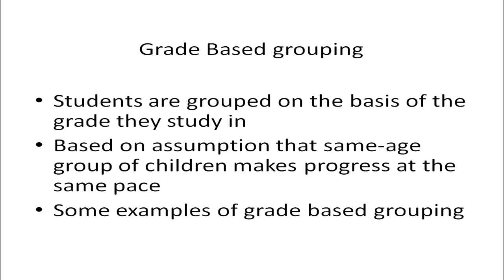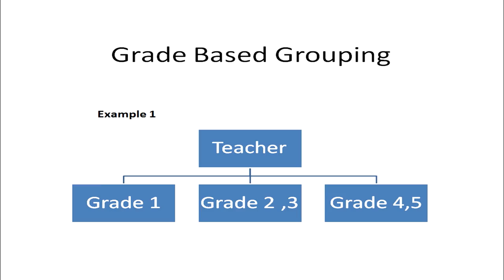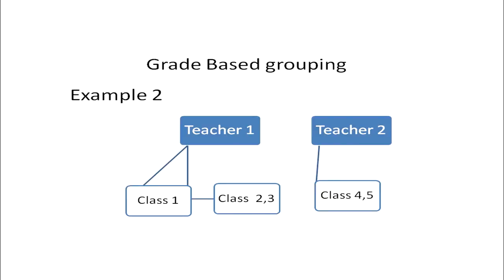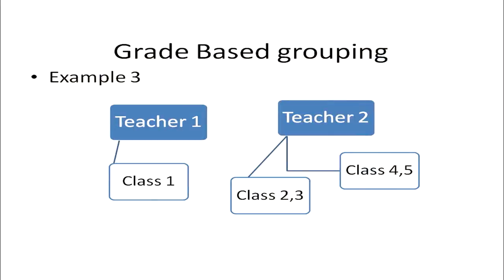Examples of grade-based grouping include: one teacher managing three groups — Grade 1, Grades 2 and 3, and Grades 4 and 5. In another example, two teachers in the same classroom manage Class 1, a group of Classes 2 and 3, and a group of Classes 4 and 5 respectively.